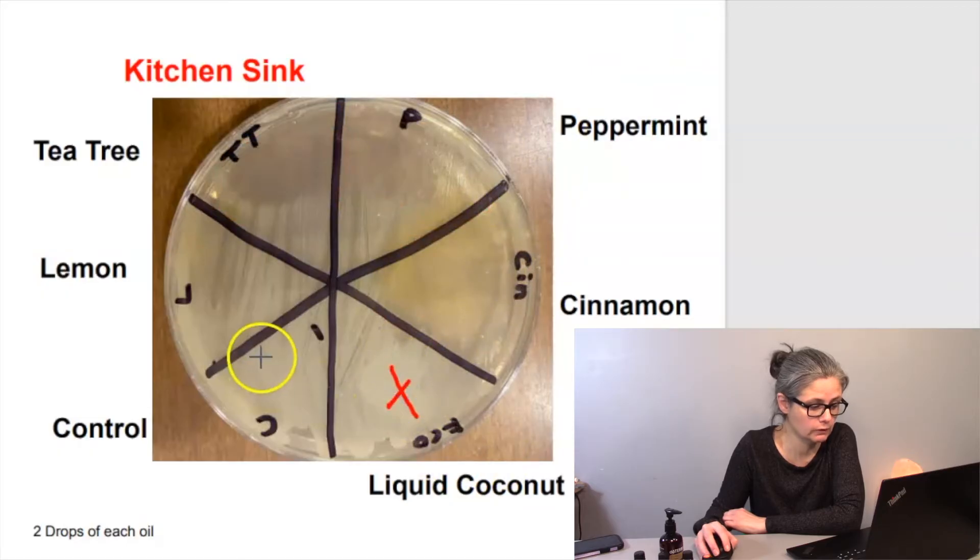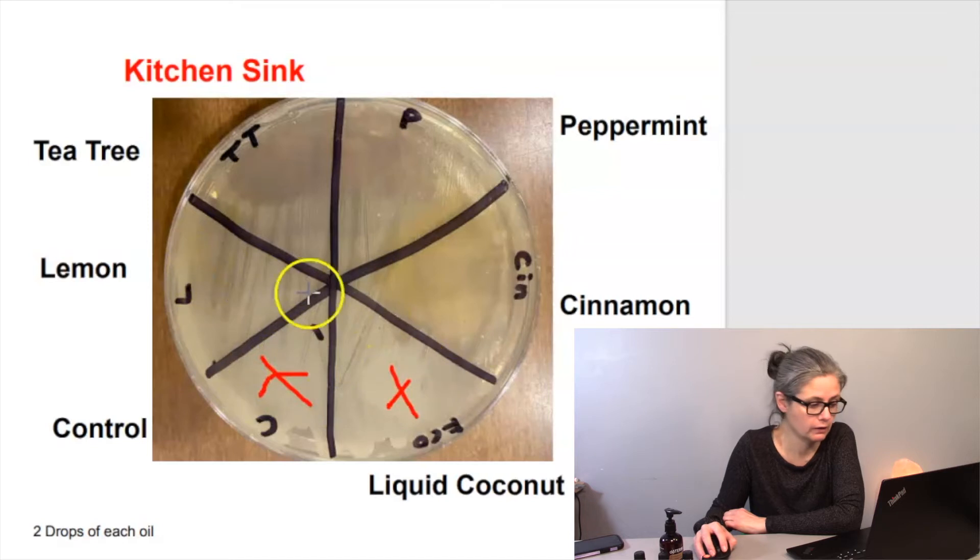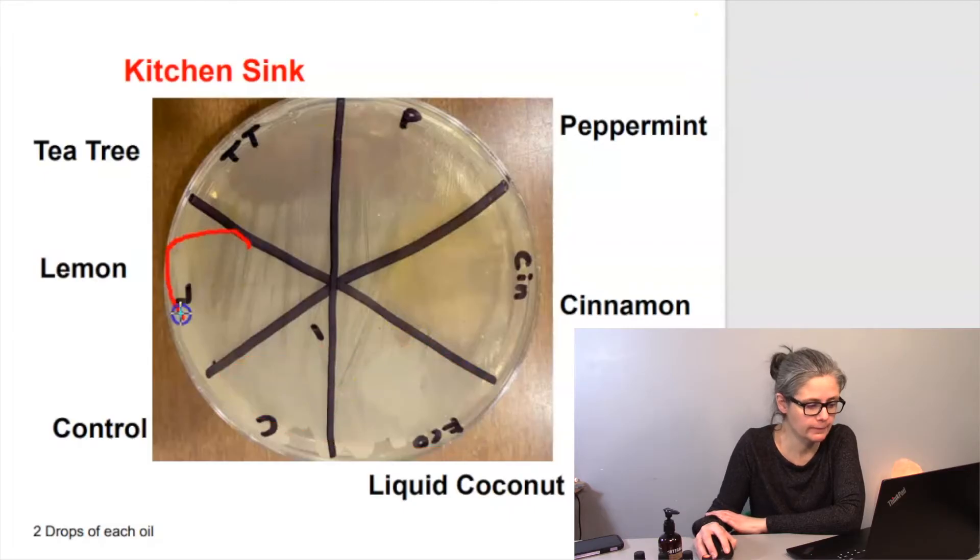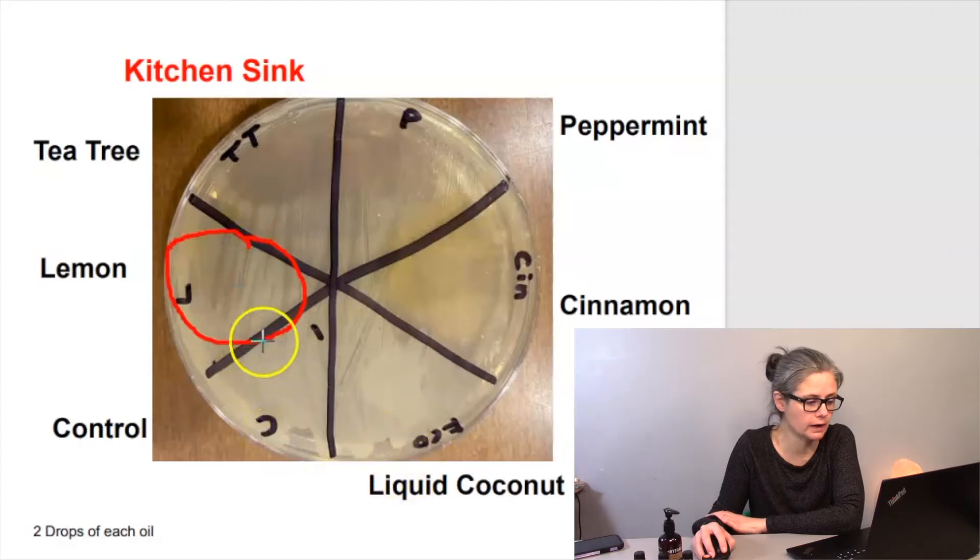Then in the fractionated coconut oil, the control, there is definite growth there. Here it looks like the liquid coconut oil and the control have about the same amount of growth in their sections. The lemon seems to have less than the control and the liquid coconut, but more than the tea tree and the peppermint.